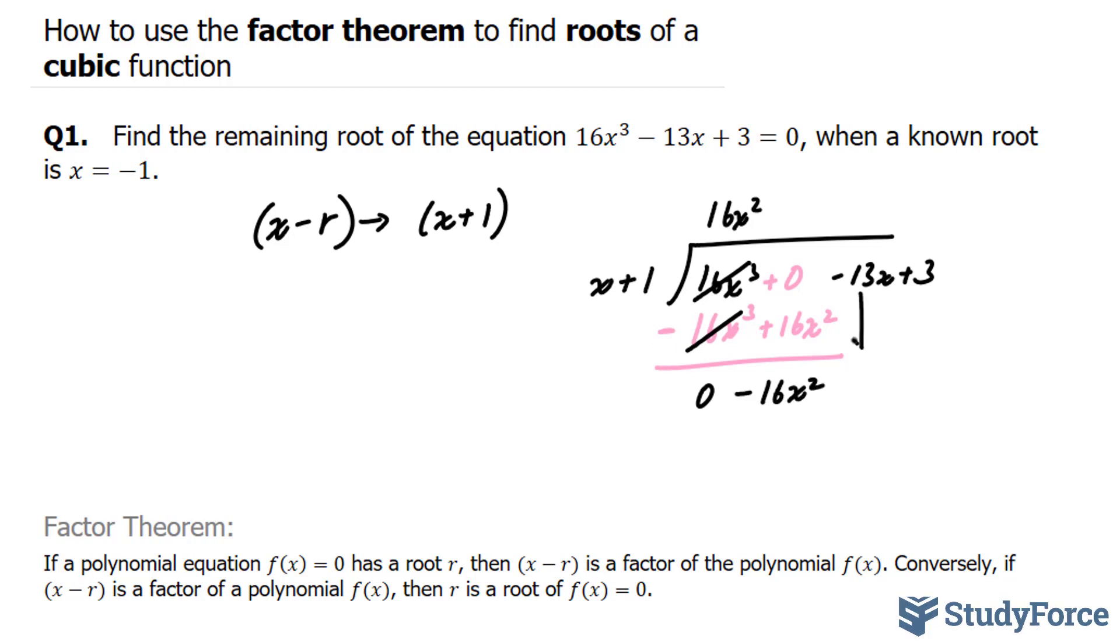Now we'll bring this term down, where I have -13x. I'll divide this term with x. -16x² divided by x is -16x. Multiplying this to both of these terms gets me -16x², and this term times 1 gives me -16x. I'll be subtracting these two expressions. This gives us 0, and -13x minus -16x, that's like saying -13x + 16x, is positive 3x.